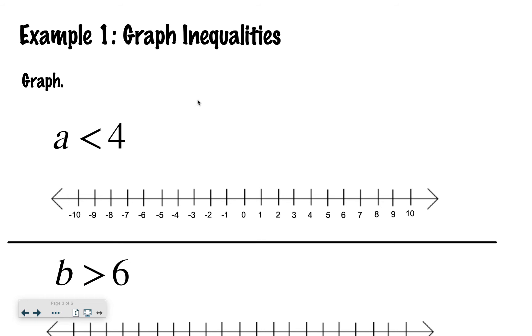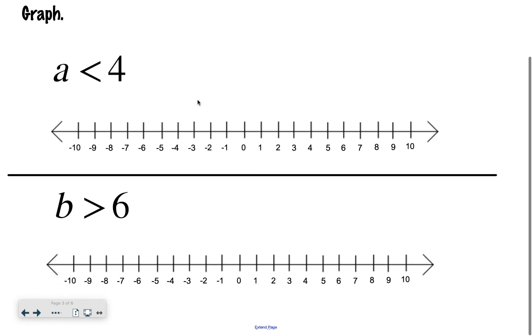So if we are practicing how to graph inequalities and we have a is less than 4, the first thing I'm going to do is an open circle at 4, and then anything that's less than 4, that would be like 3, 2, 1, so I would draw my arrow going this way.